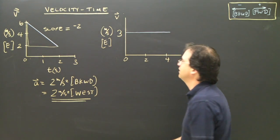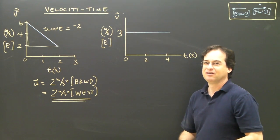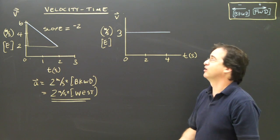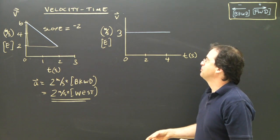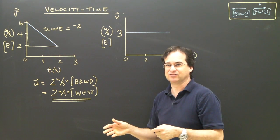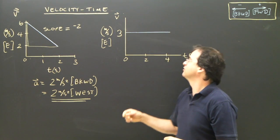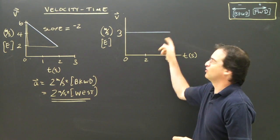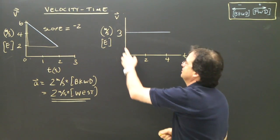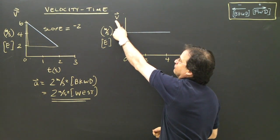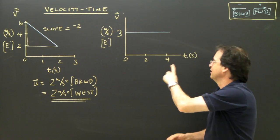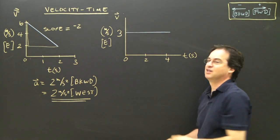Let's look at the second graph. This one — typically people give me the wrong answer when I put it on a test, because they're so used to looking at DT graphs, position-time graphs, where a horizontal line means nothing's really happening. But we have to remember: this graph tells us how fast we're going at any given time.